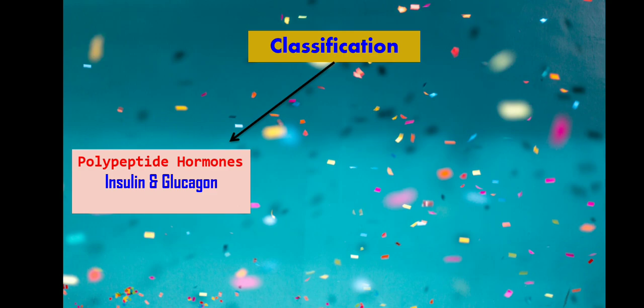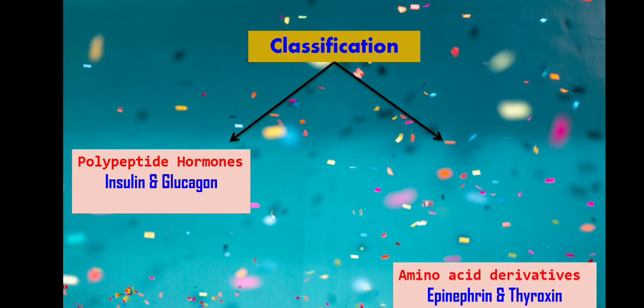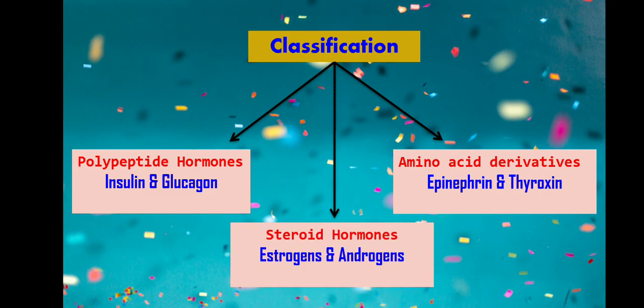I am restricting myself to the textbook classification. Three types of hormones are mentioned: first, polypeptide hormones — examples are insulin and glucagon; second, amino acid derivative hormones — examples are epinephrine and thyroxine; and third, steroidal hormones — examples are estrogens and androgens. These are the three classes of hormones in your textbook.